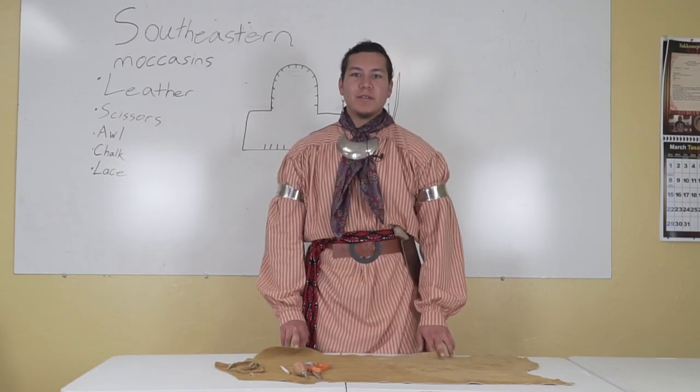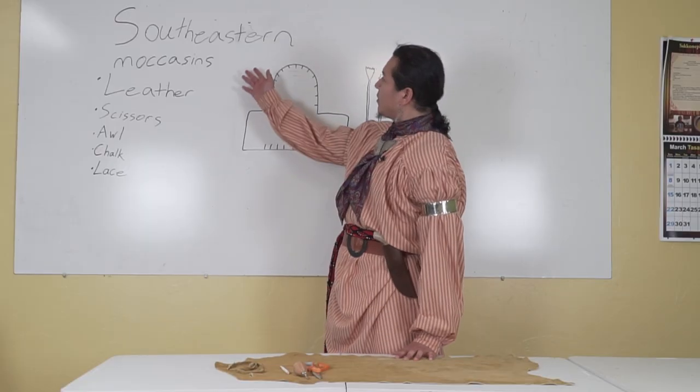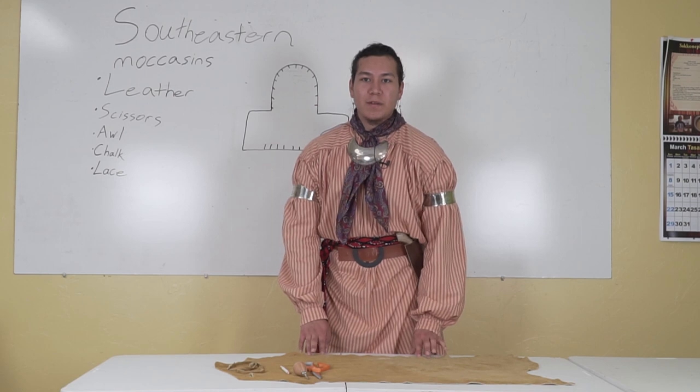Stongo, my name is Jake Tiger. I am with the Dissemination of Oklahoma Historic Preservation. I'm the cultural technician and today we'll be learning how to make southeastern moccasins.